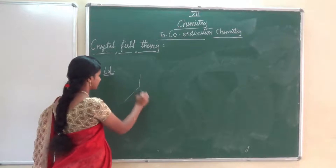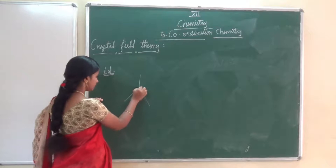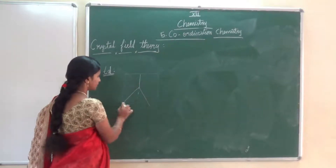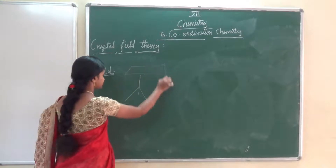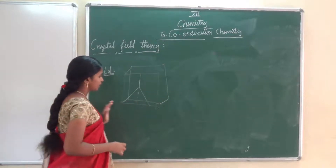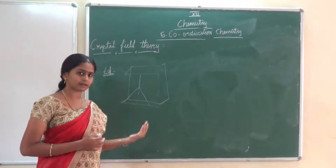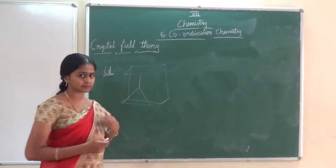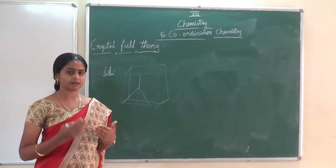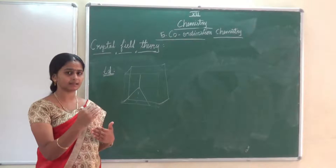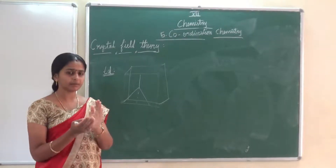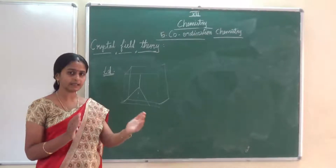In a tetrahedral complex, when the ligands approach, the degeneracy will be disturbed and it will be split into two parts: eg and t2g. The ligands in a tetrahedral complex approach at the alternate corners of a cube — they approach in between the axes rather than directly along the axes as in the octahedral case.